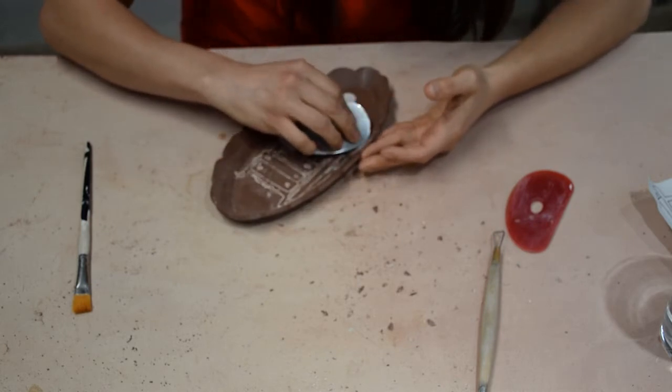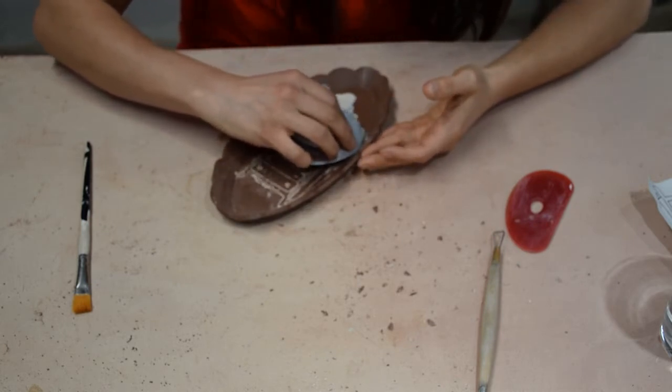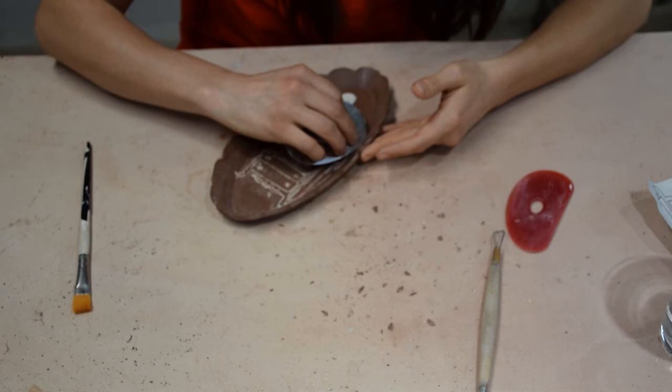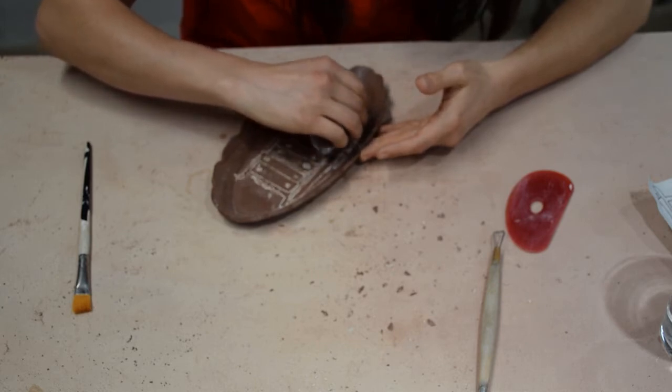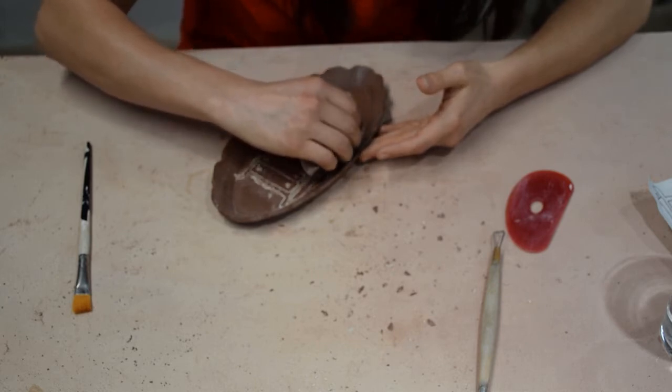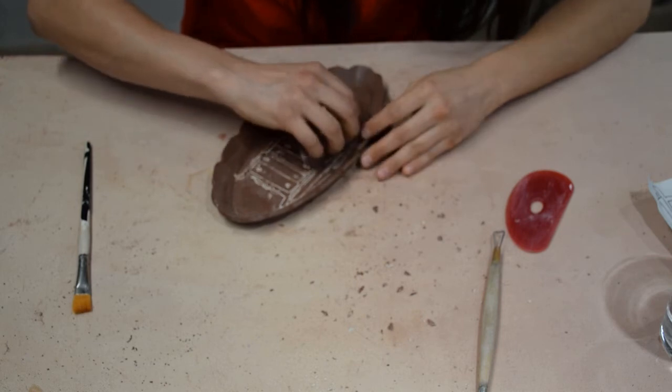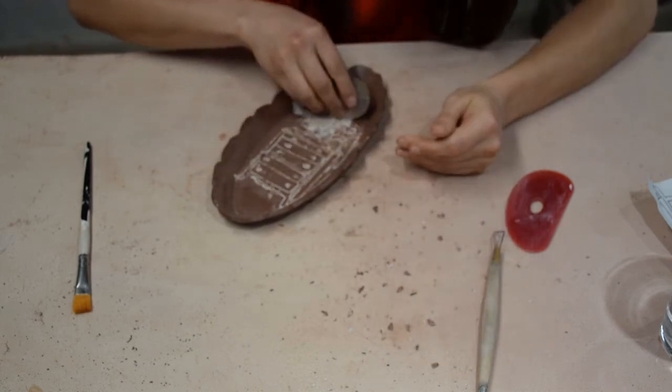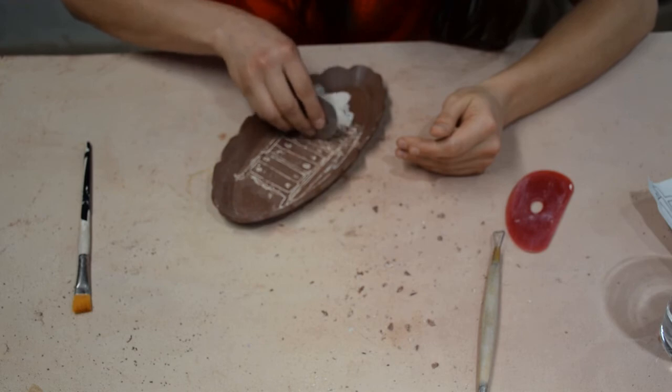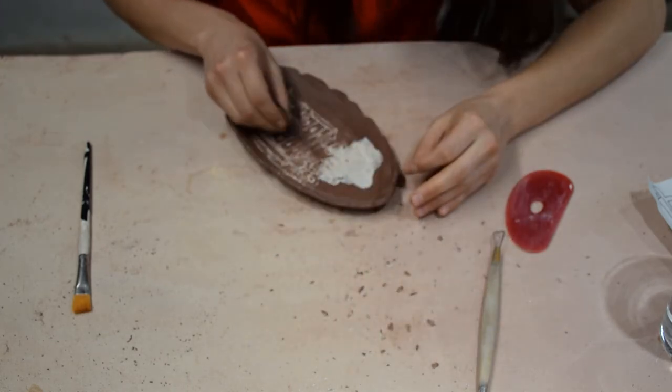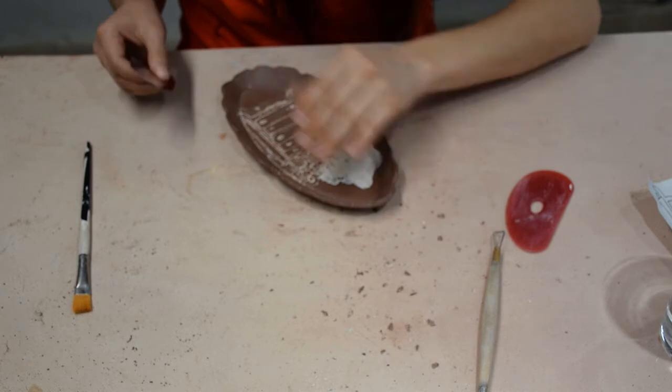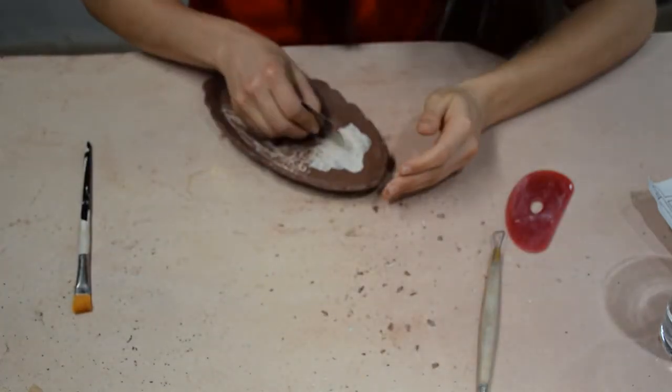I'm using my dry brush to remove all my clay boogers. I call them clay boogers. Not everybody calls them clay boogers. All my little bits of clay. And I'm bending the rib to the shape of my little platter. As you can see, the image is revealed as you go along.